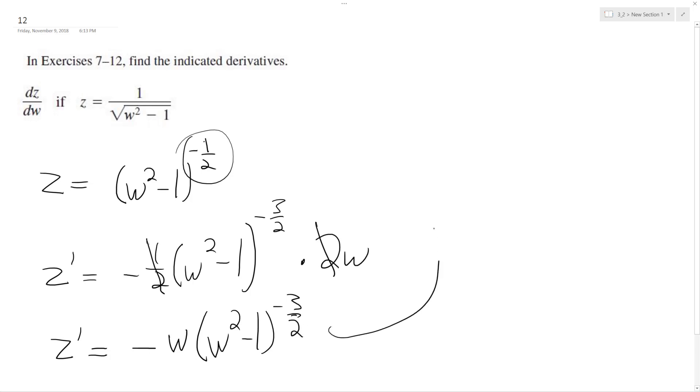And if you want to write this without any exponents, it's just going to be z prime is equal to negative w over w squared minus 1 raised to the 3 halves. And that's it.